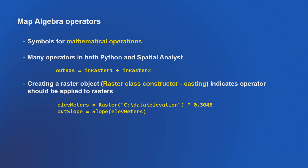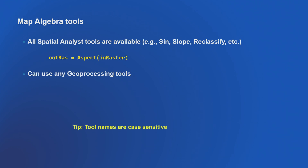I can take the output from that as input into the next statement. What is elevation_meters? A raster object. For my AML people — we're in Python now, make sure you're case sensitive. The tool names are case sensitive. Any geoprocessing tool is available to you.